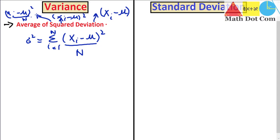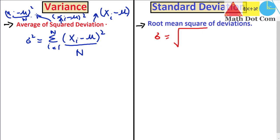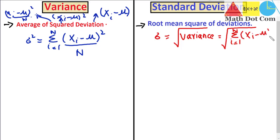Now let's move towards standard deviation. Standard deviation is defined mathematically as the root mean square of deviations. Standard deviation is similar to variance in mathematical form, but it differs in that its formula is: sigma equals the square root of variance. It means if you have the variance, you just take the square root to get the standard deviation. Writing it out: sigma equals the square root of the summation of (xi minus mu) squared, divided by n. This is the formula for standard deviation.